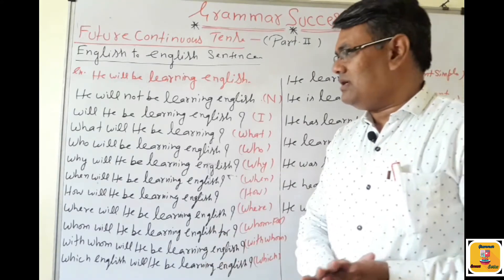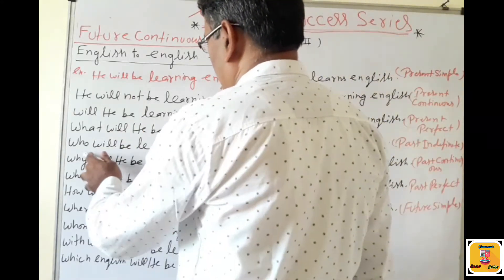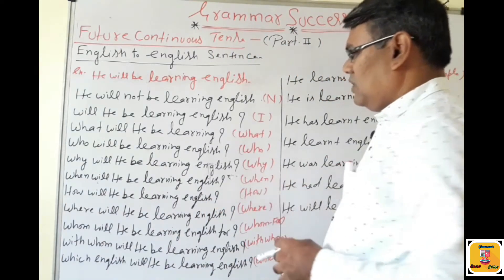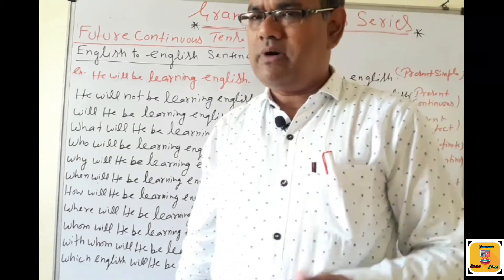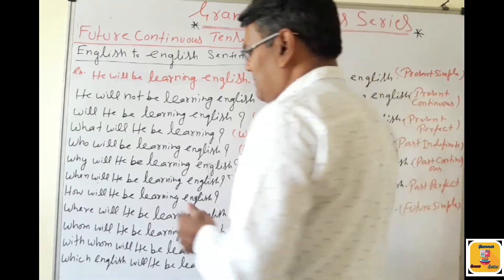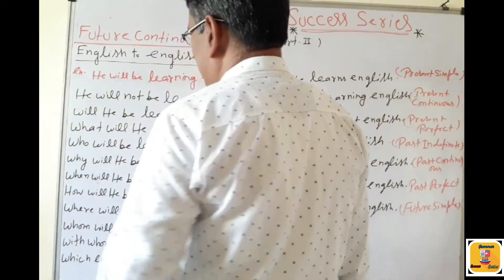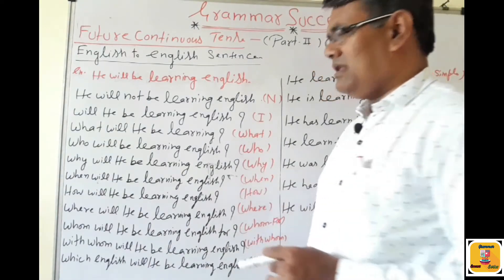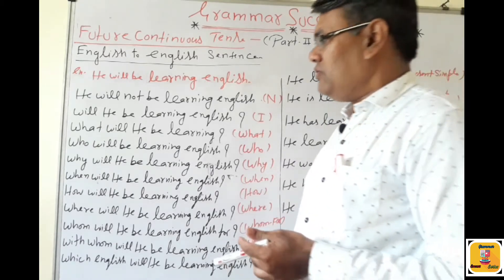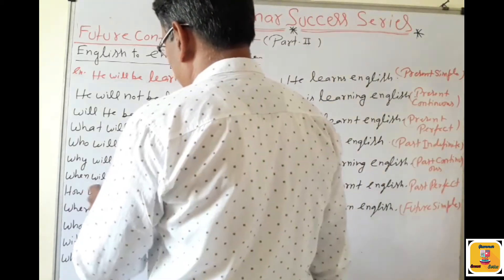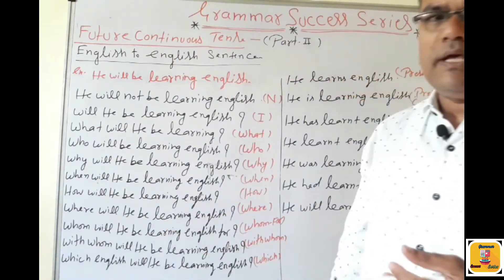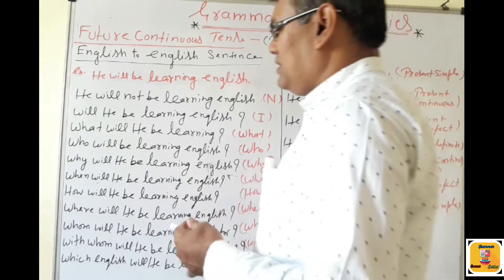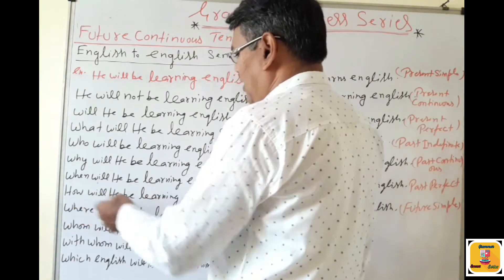Use of 'Why' — why will he be learning English? Use of 'When': if the time is showing, we should use 'when' before the subject. 'When will he be learning English?' We will not remove the time. Next, use of 'How' — manner. 'How will he be learning English?'